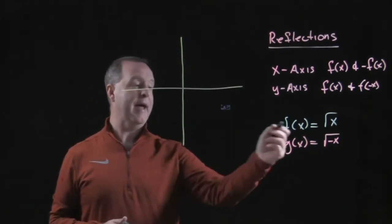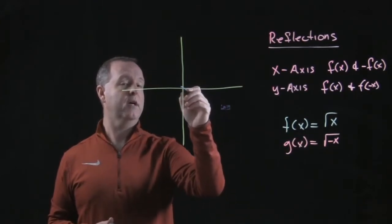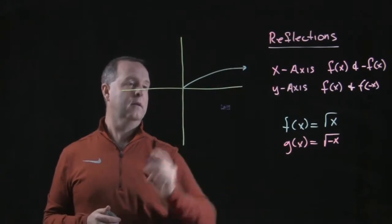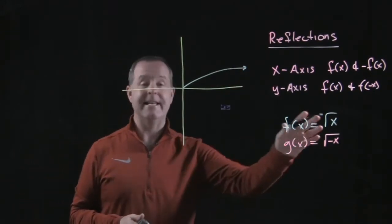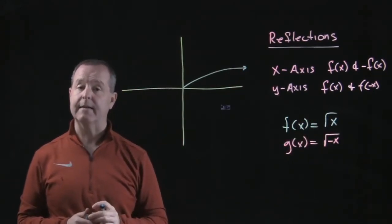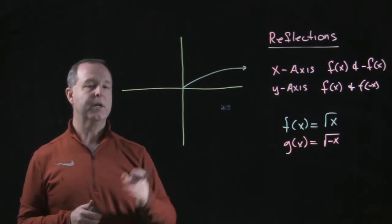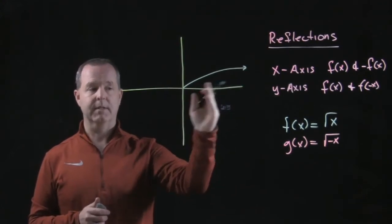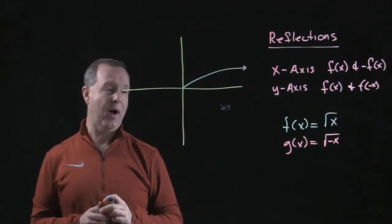My f of x function is a basic square root function. Its domain is all positive numbers because I cannot take the square root of a negative number in the context of all real numbers. So notice that my graph is limited to the domain of all positive numbers. It does not come to the other side of the y-axis.